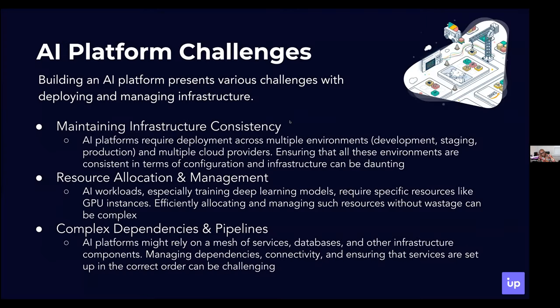There are a few challenges with building an AI platform, especially when it comes to deploying and managing infrastructure. AI platforms can require a bit more orchestration — there are lots of components. One of the biggest challenges is just maintaining consistency: AI platforms tend to leverage resources across multiple environments, across multiple clouds and providers, using different instance types and different services. Just going to AWS and looking at their AI-related services — there are like dozens of them — maintaining consistency in an environment like that can be extremely challenging.